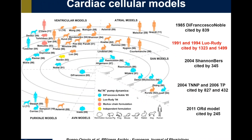I also looked at the number of citations of papers describing these computer models. You can see that the Luo-Rudy model, which was a very basic representation of the guinea pig action potential, has over a thousand citations, and other models have a huge number of citations. The O'Hara-Rudy model in just a few years has 245 citations. I don't focus on citations only, but I think this tells you the amount of work that has been done using these models — both new mathematical developments and tons of studies using these models for specific questions and applications.